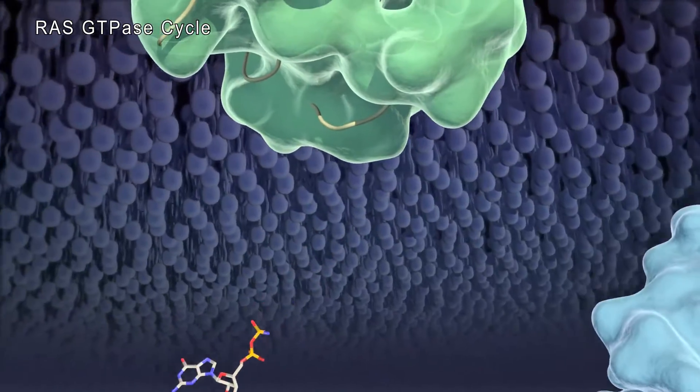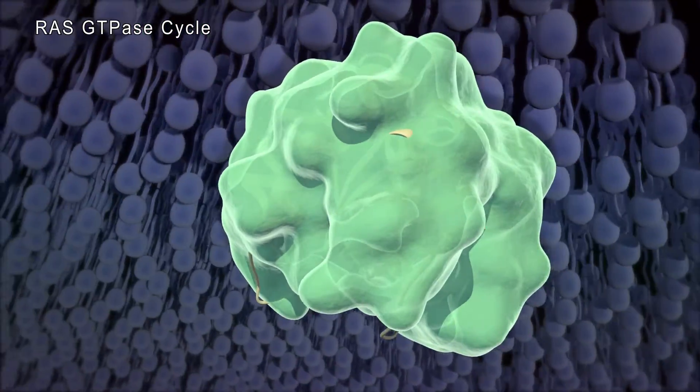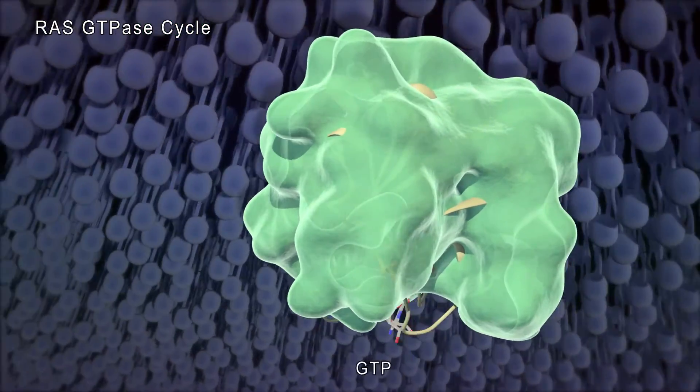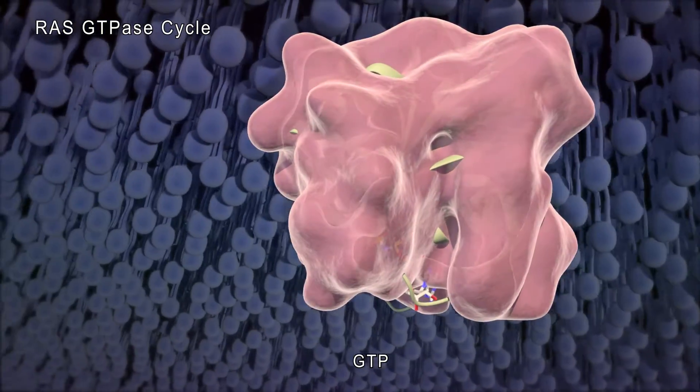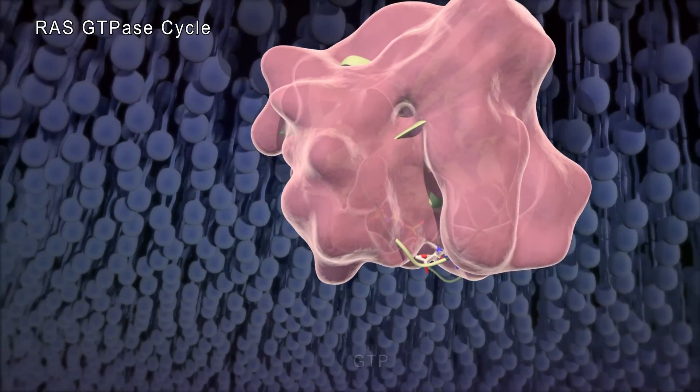Unbound Ras will preferentially bind to GTP. Once Ras is bound to GTP, it becomes active and will participate in cellular signaling.